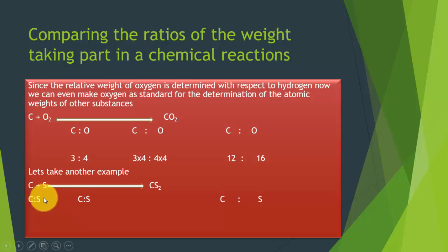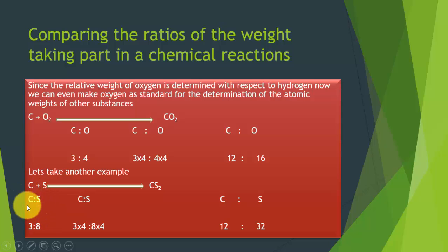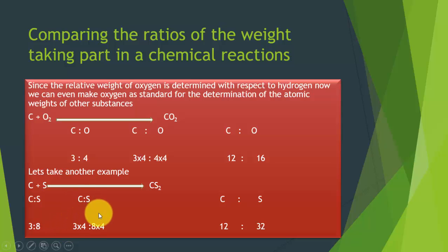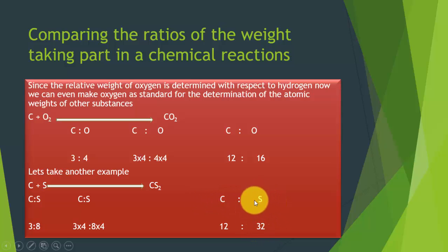Let's see another example. Carbon reacts with sulfur to form carbon disulfide, and we already know the atomic mass of carbon is 12. From the experiment, the ratio of carbon to sulfur is 3 to 8. To make carbon's value 12, we multiply both by 4, giving sulfur a value of 32. This is how the atomic mass of sulfur was determined using the ratio method.